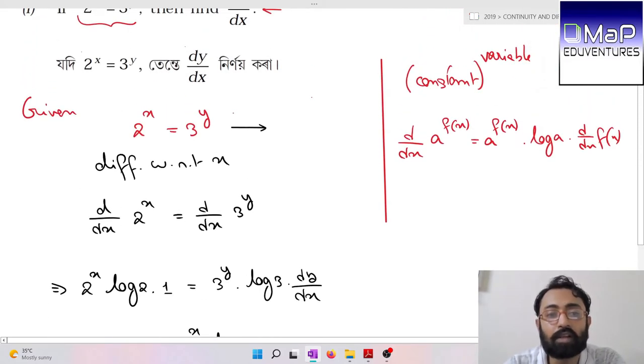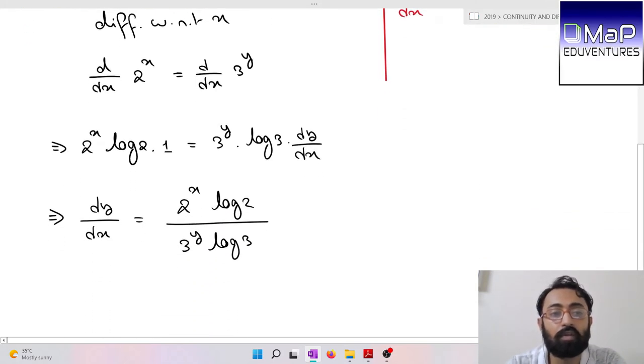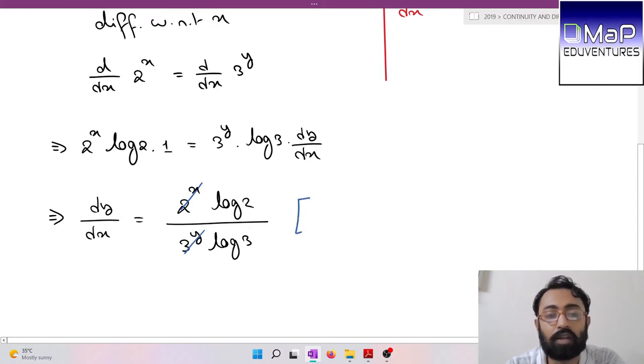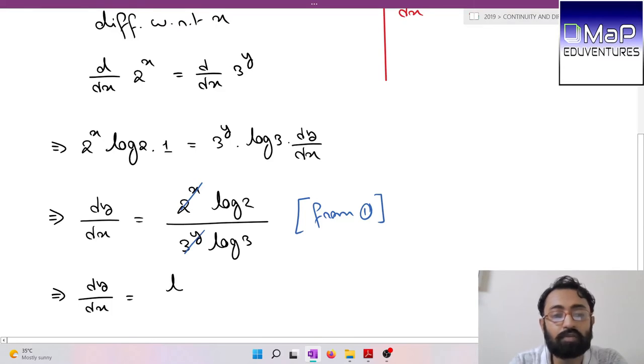They are equal, so the whole form becomes one. My answer is dy/dx equals log 2 by log 3. This is your final result.